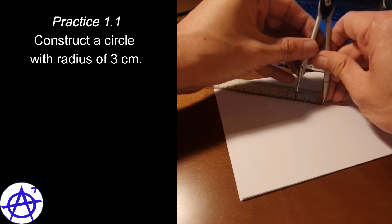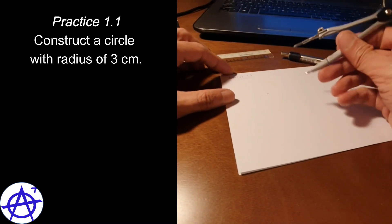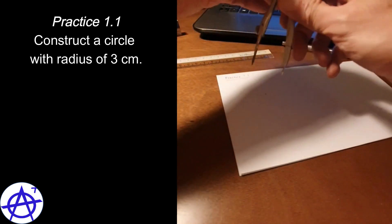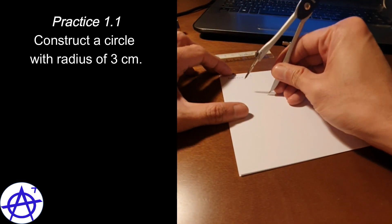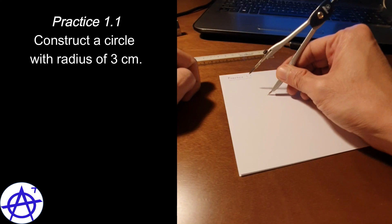So 3 cm, okay. Now what I'm going to do next is put the pointed end, this is the pointed end, at the center at a point that we indicated as the center of the circle.